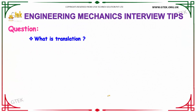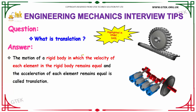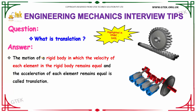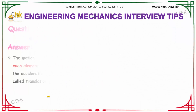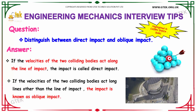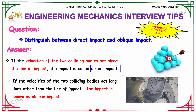The next question asks about translation. The motion of a rigid body in which the velocity of each element in the rigid body remains equal and the acceleration of each element remains equal is called translation. Distinguish between direct impact and oblique impact: if the velocities of two colliding bodies act along the line of impact, the impact is called direct impact. If the velocities of two colliding bodies act along lines other than the line of impact, then the impact is said to be oblique impact.